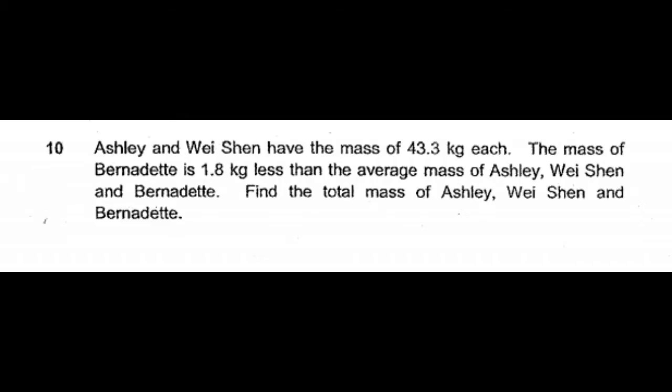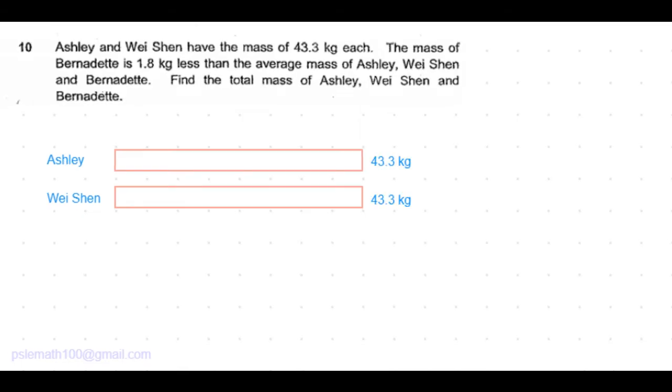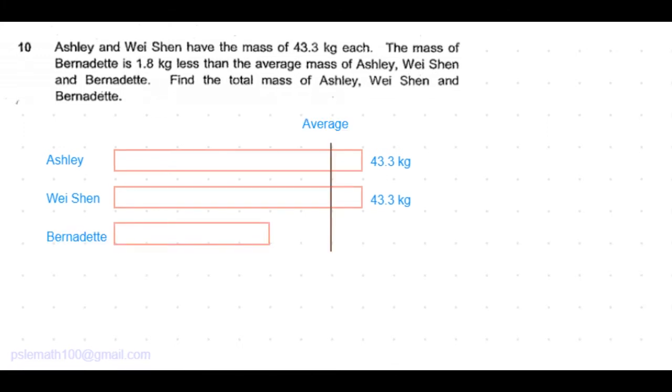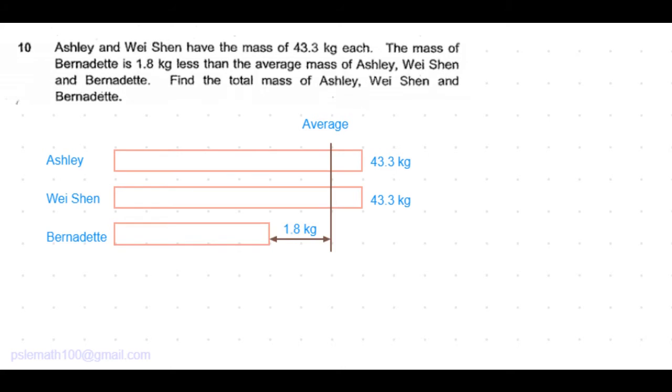Let's draw for Ashley and Wei Shen. We know that each of them is 43.3 kilograms, and Bernadette is less than the average by 1.8 kilograms. We draw the average somewhere in between the lowest mass and the highest mass. Both Ashley and Wei Shen are equally more than the average, so let's call that one unit.